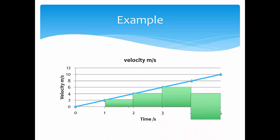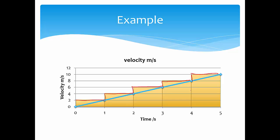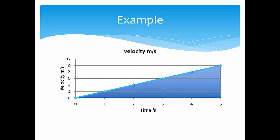You can try to calculate the distance by estimating it this way, but you realize this is an underestimation of the displacement. Alternatively, you can overestimate it — instead of the lower step, you use the upper step, which gives a velocity-time profile that overestimates the distance. In order to accurately calculate displacement for an object with constant acceleration, you simply need to find the area under the graph.